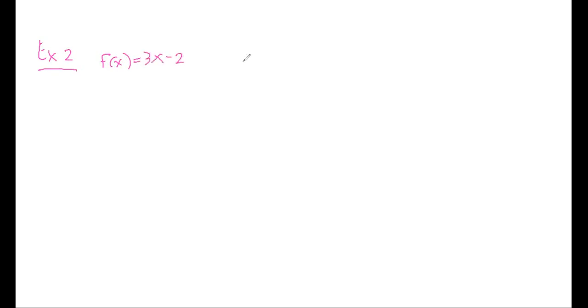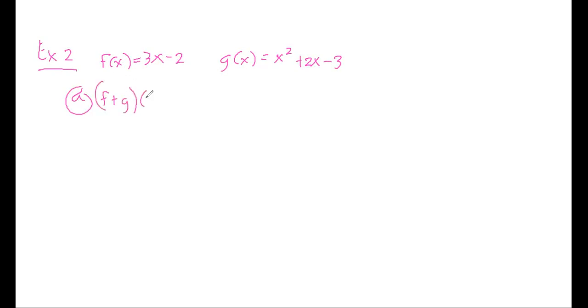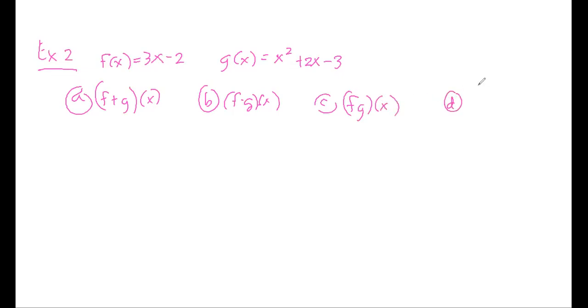In example number 2, the given f(x) is 3x minus 2, while the given g(x) is equal to x squared plus 2x minus 3. We need to solve for: (a) the sum function, (b) the difference function, (c) the product function, and (d) the quotient function.